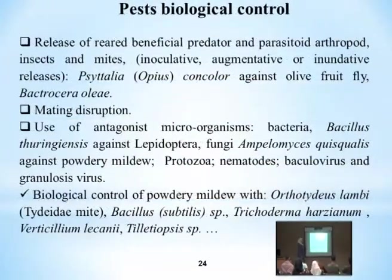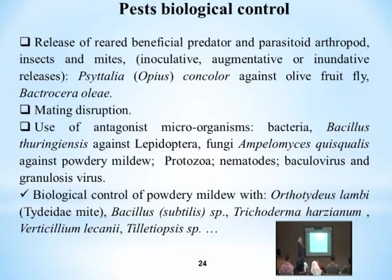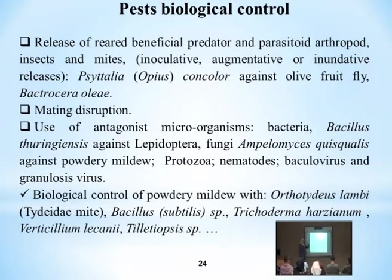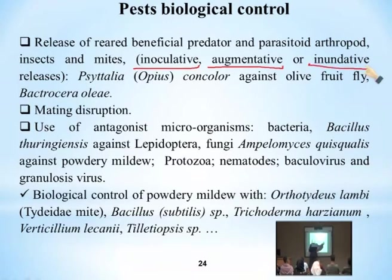Now, first biological control — the second method we discussed is biological control. What does biological control mean? We release beneficial predators and parasitoids for insects and mites. This is the use of natural enemies — biological control — using either parasites, predators, or microbes whose role is to feed on plant diseases, harmful insects, and mites. We use three terms: inoculation, augmentation, and inundative release.